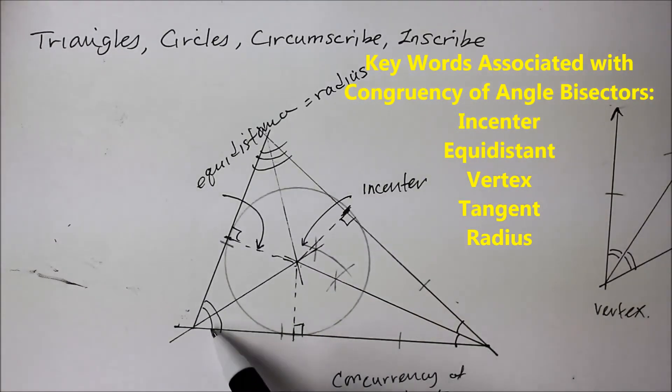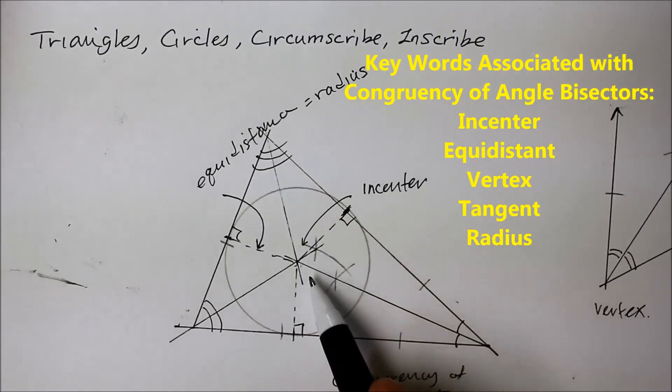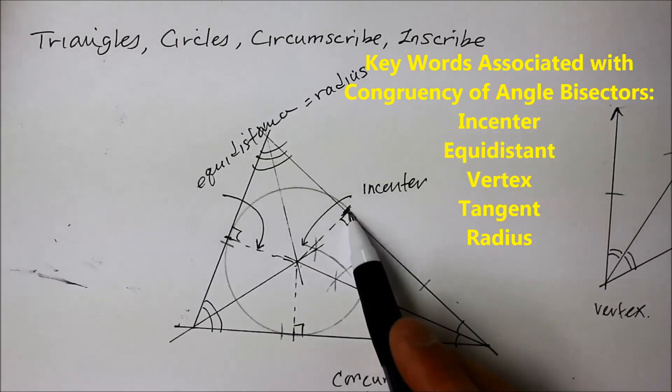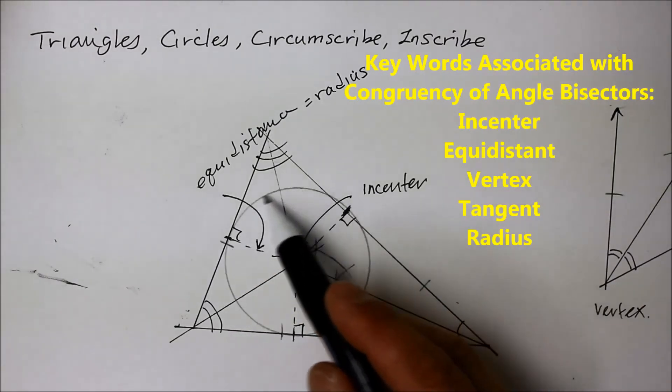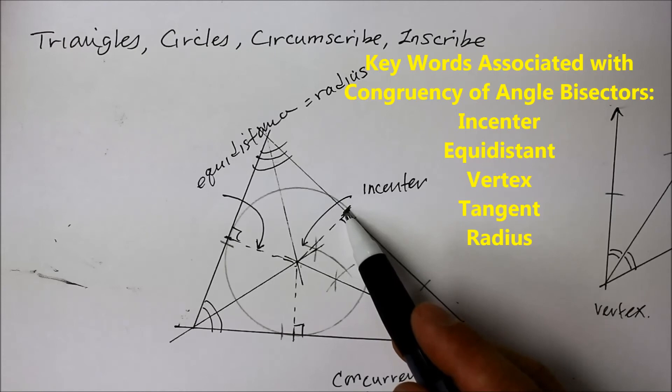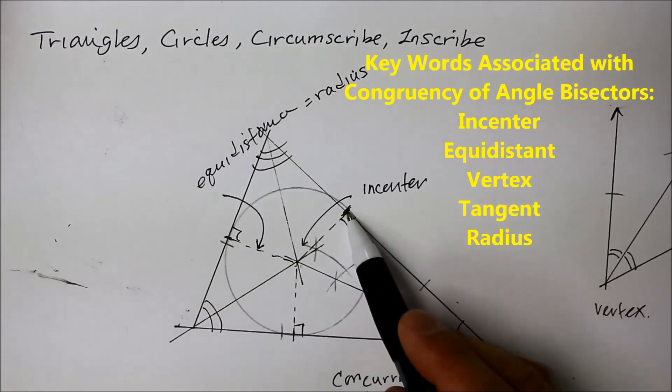Where the three angle bisectors come together produces the incenter from which the distance from the center to the tangent point of a circumference and the side of a triangle becomes the radius.